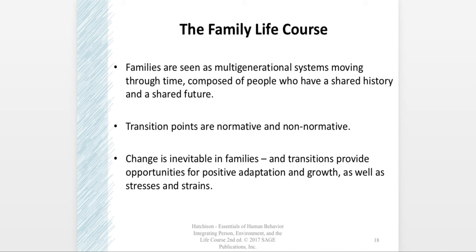In the family life course perspective, families are seen as multi-generational systems moving through time, composed of people who have a shared history and a shared future. Transition points in the family life course can be normative — things like launching children and retirement — or non-normative, such as the death of a loved one, a family move, or loss of employment. Regardless of what causes these transitions, change is inevitable, and a transition either gives the family an opportunity to adapt positively and grow, or to bend and break under the stresses of those transitions.